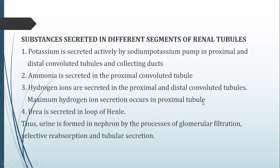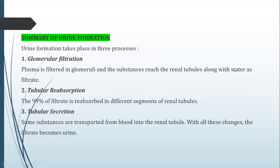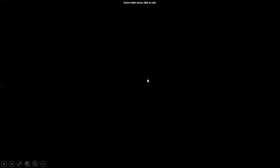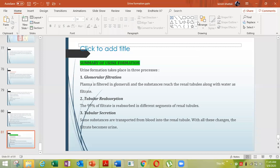Substances secreted in different segments: potassium is secreted by sodium-potassium pump in the proximal and distal convoluted tubule and collecting duct. Ammonia is secreted in the proximal convoluted tubule. Hydrogen ions are secreted in the proximal and distal convoluted tubule — important for acid-base balance. Maximum hydrogen ion secretion occurs in the proximal convoluted tubule. Urea is also secreted in the loop of Henle. This completes the story of urine formation: glomerular filtration in the glomerulus, tubular reabsorption of 99% of filtrate, and tubular secretion — after which the filtrate becomes urine.